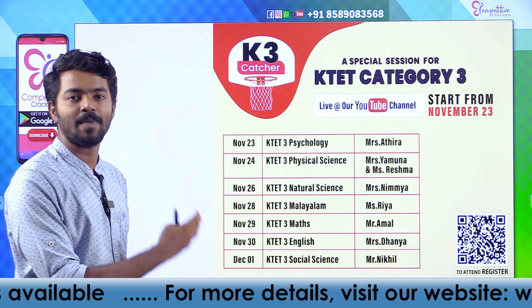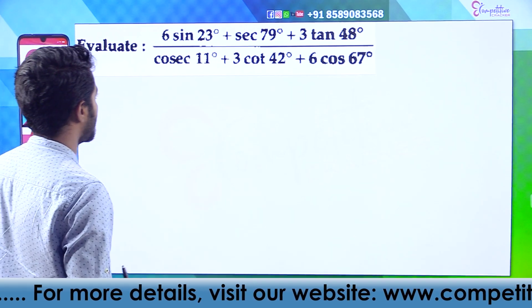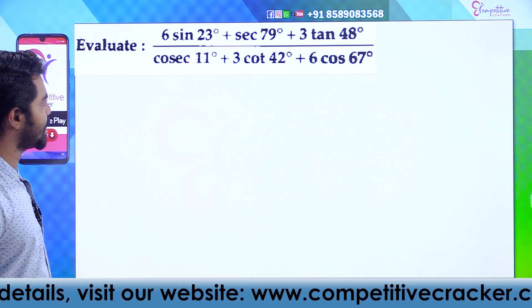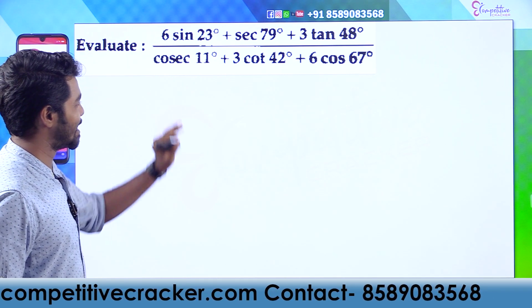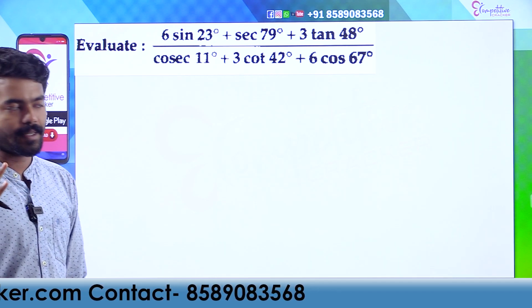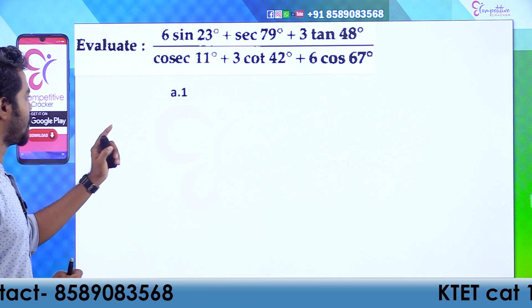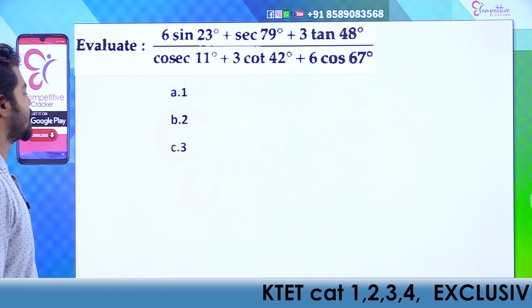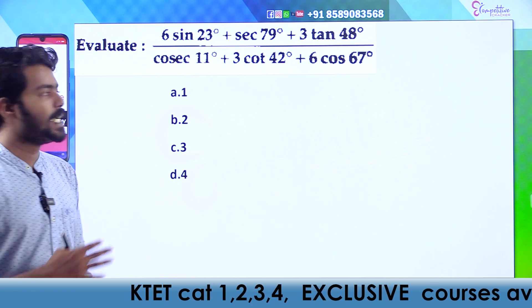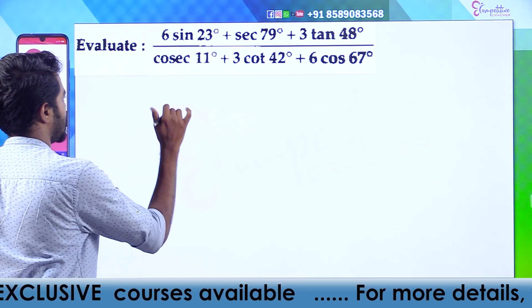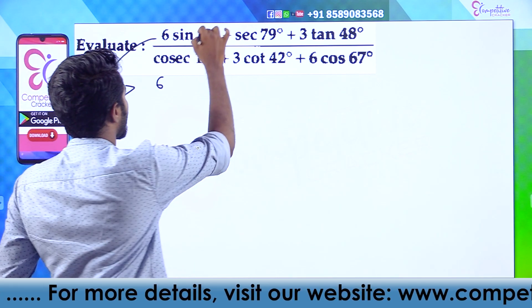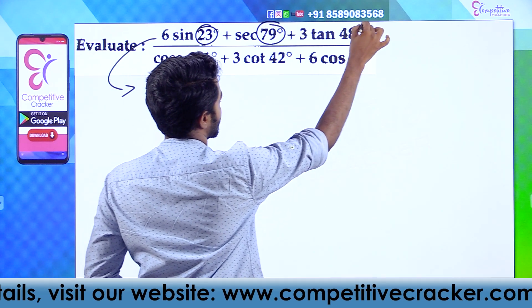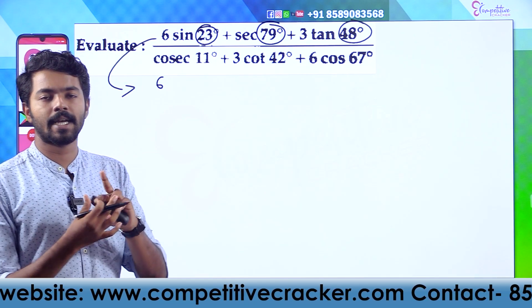Now we are going to show you the next question. Evaluate: (6 sin 23° + cos 79° + 3 tan 48°) divided by (cos 11° + 3 cos 42° + 6 cos 67°). It equals dash. Option A: 1, Option B: 2, Option C: 3, Option D: 4. Let's examine this with a little logic.